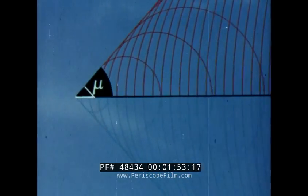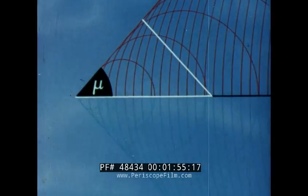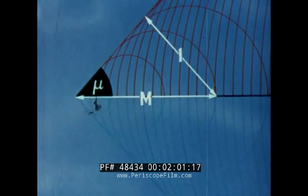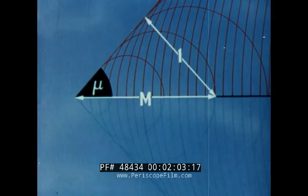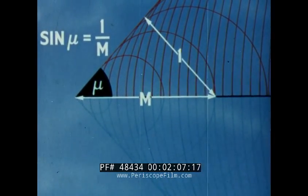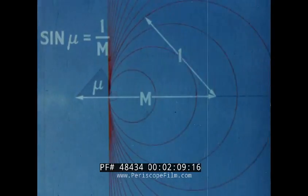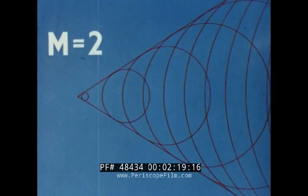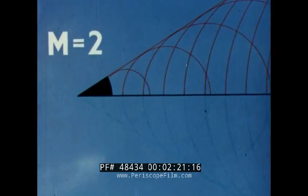The size of this angle depends on the ratio of the point's forward speed to the speed of sound, that is, on the Mach number. At Mach one, the Mach angle is 90 degrees. As the Mach number is increased, so the Mach angle grows smaller.